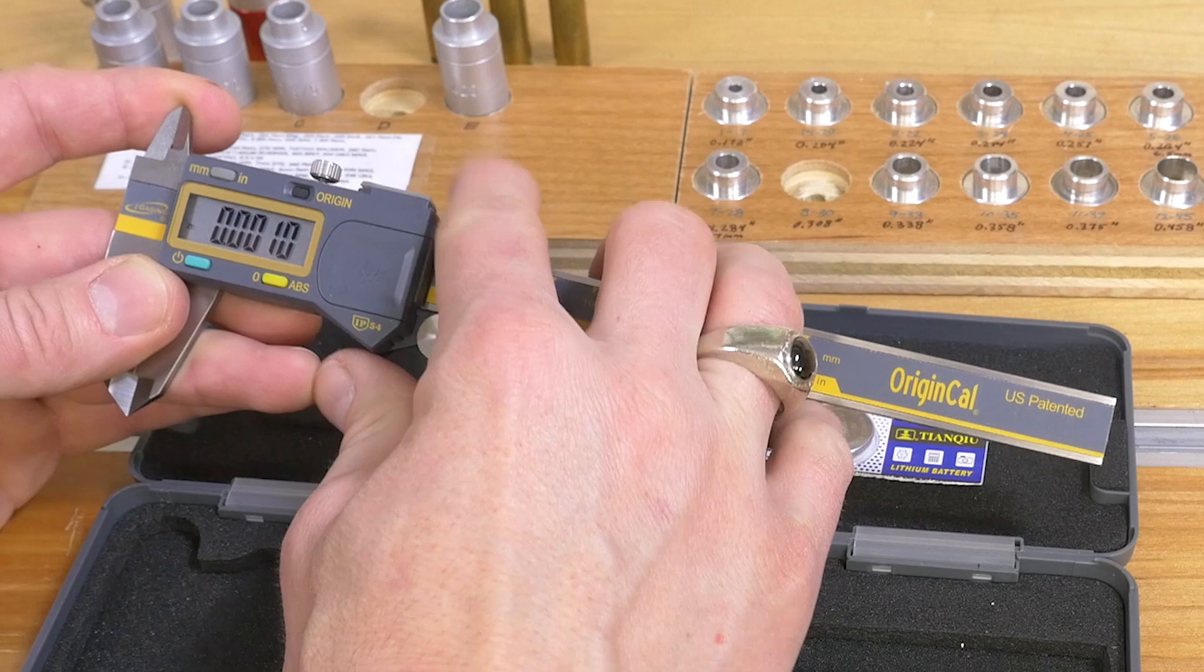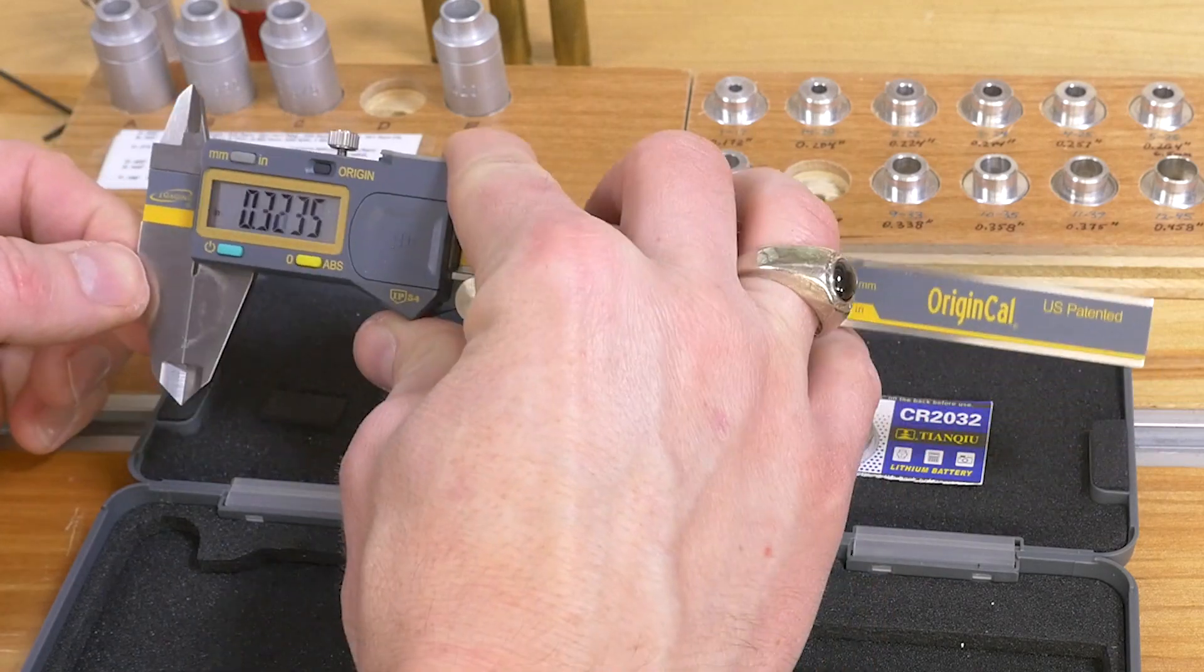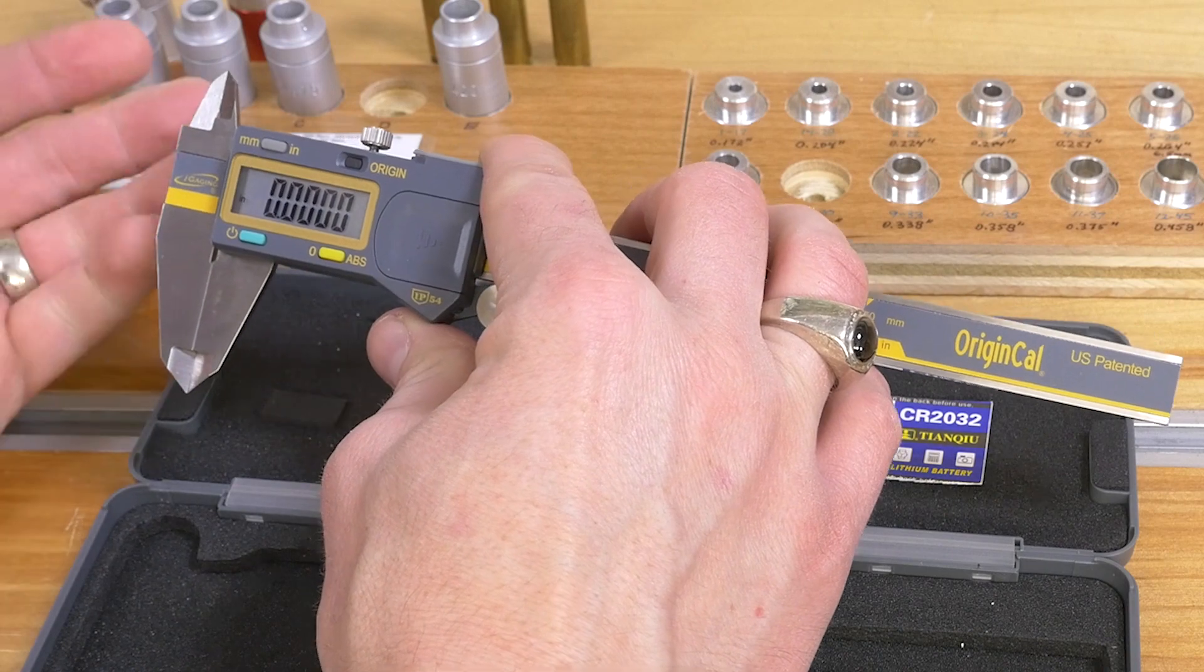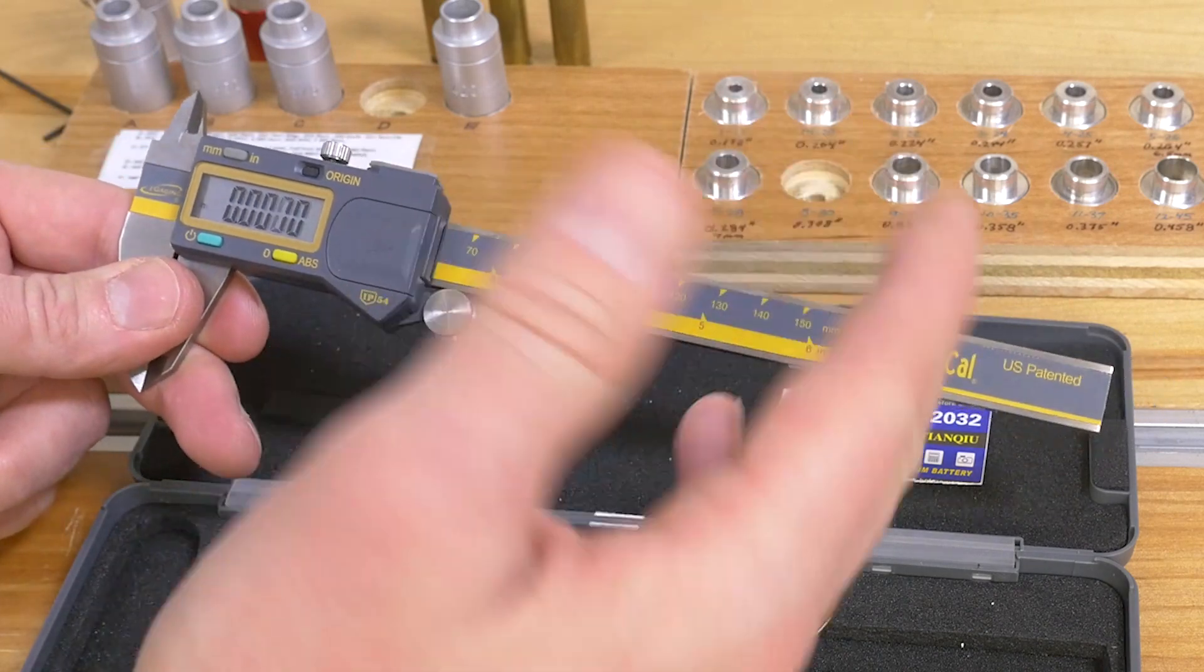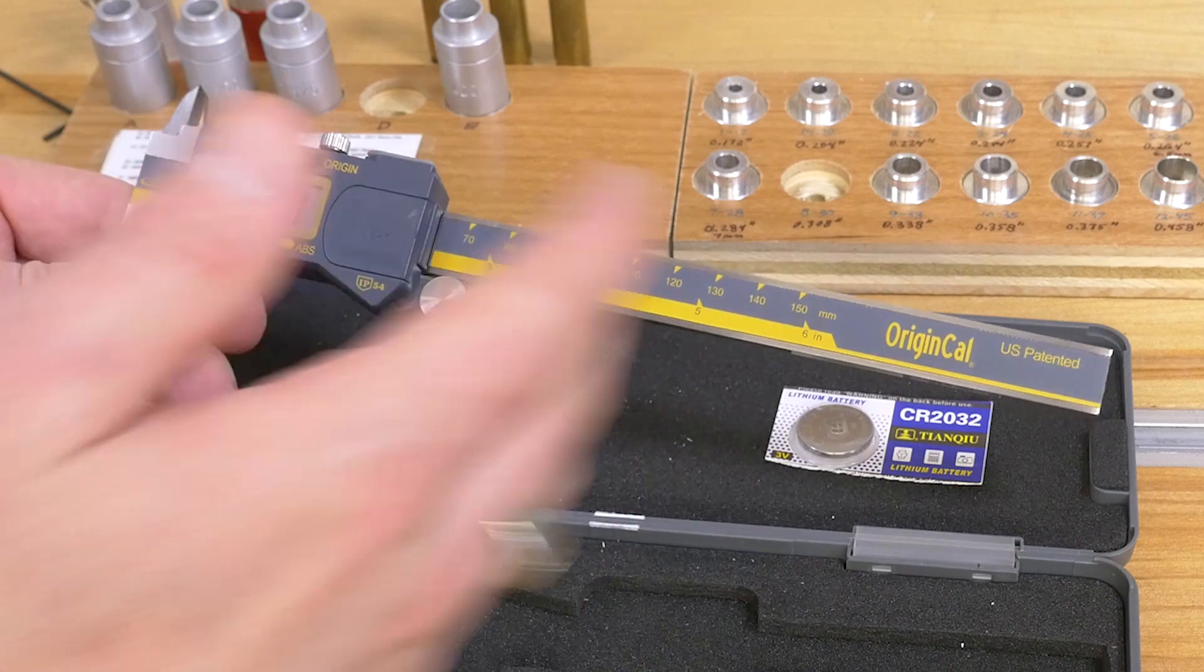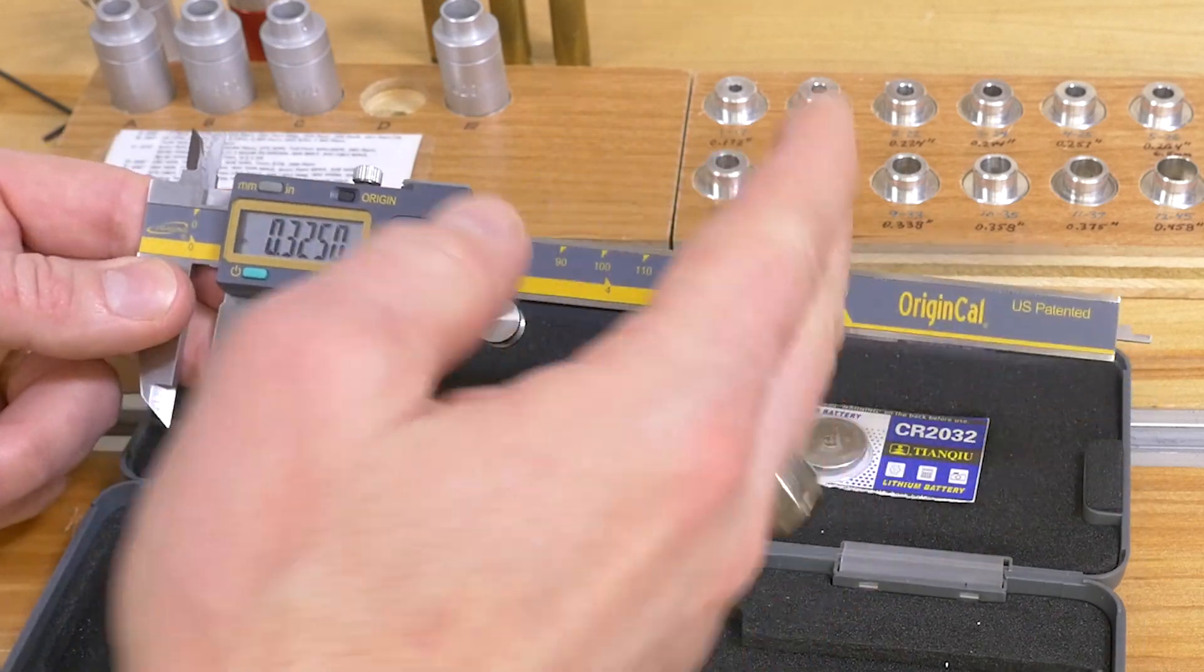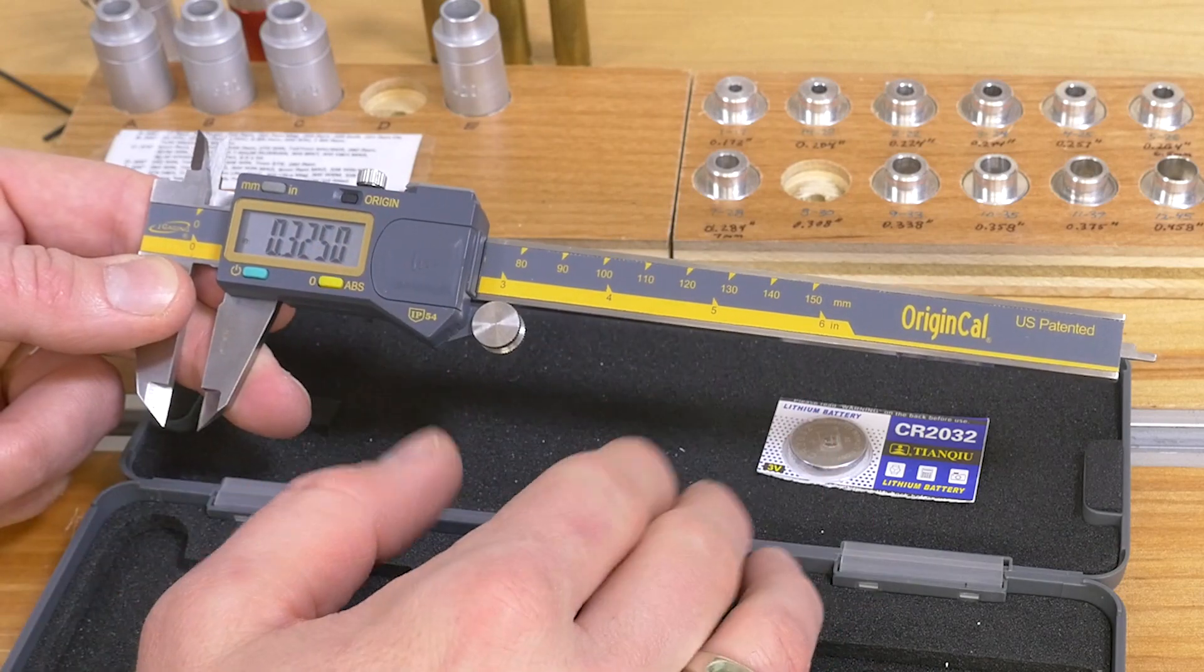You can turn these on, and this is what got my attention when I first turned these on, is I was like, whoa, it goes exactly to zero. How is that? Well, then I looked up the fact that yes, these are, the origin cal is absolute. It means that it's got an absolute reference point when you turn them on, and it remembers that reference point.